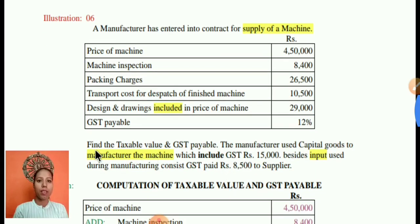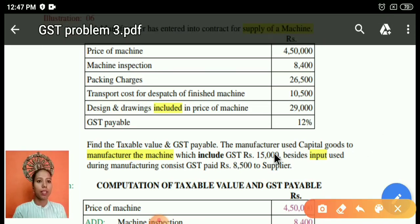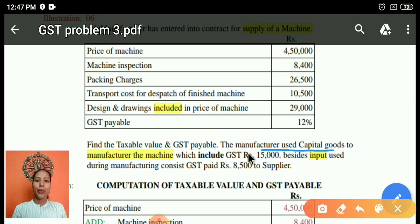To find the taxable value and GST payable, after adding all the charges you will get the taxable value, then apply the GST rate at twelve percent to get the GST payable. Now the manufacturer also used capital goods — meaning equipment used as an input while manufacturing the machine.